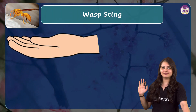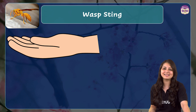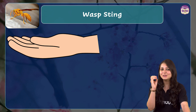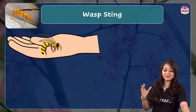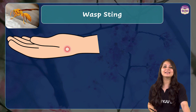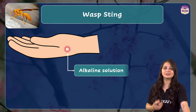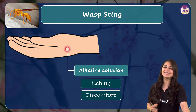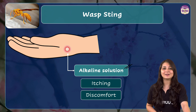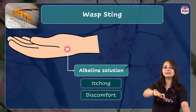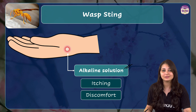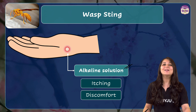Now coming to wasp sting — if you think baking soda will give you relief in this case, then let me tell you, you need to drop that idea right away. During a wasp sting, an alkaline — that is, a basic — solution is injected into the skin, causing itching and discomfort.